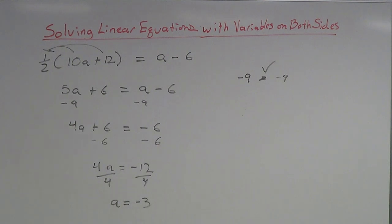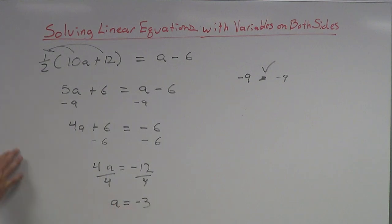That is solving linear equations with variables on both sides. The big thing you need to remember is make the decision — which side do I want my variable on? After that, get your variables on one side and your numbers on the other, then continue solving from there. Always, always, always take your answer and plug it back into the equation — that's how you know 100% that you found the right answer.